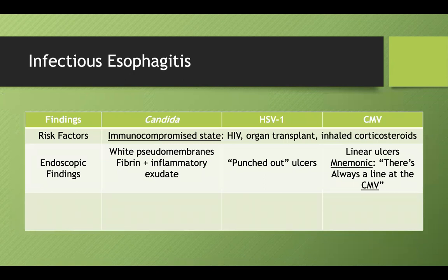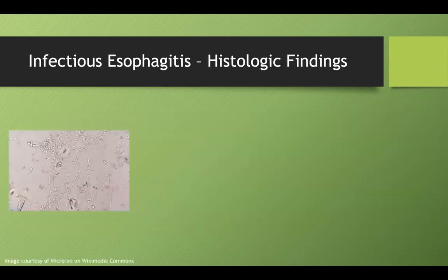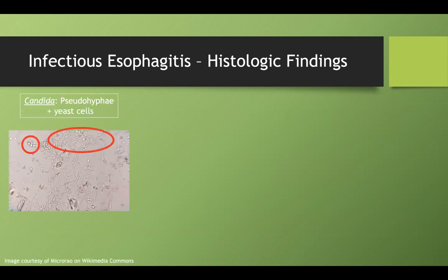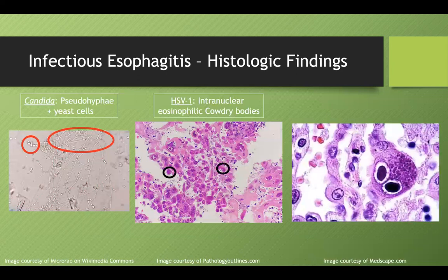They might also test histology instead of endoscopy. For Candida, you'll see yeast cells and pseudohyphae — the long branching pseudohyphae and circular yeast cells. For HSV1, you'll see Cowdry bodies, which are intranuclear eosinophilic inclusion bodies. CMV classically shows the owl-eye inclusion body. If you ever see two owl eyes on a test, that's pathognomonic for CMV infection.